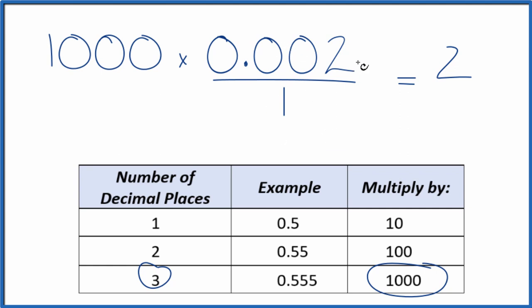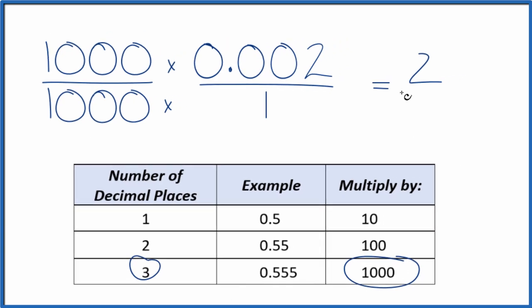But we can't just multiply the numerator. We also have to multiply the denominator by 1,000. That's because 1,000 over 1,000 equals 1. So we're just multiplying this all by 1. It won't change the value, just the way it's represented. So 1,000 times 1 gives us 1,000.